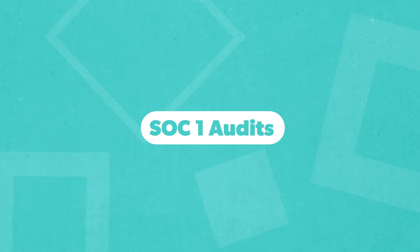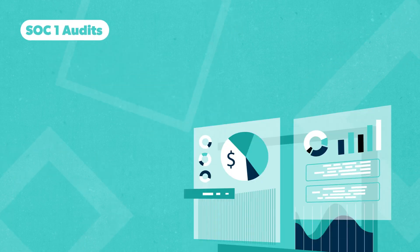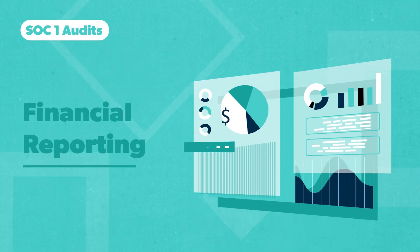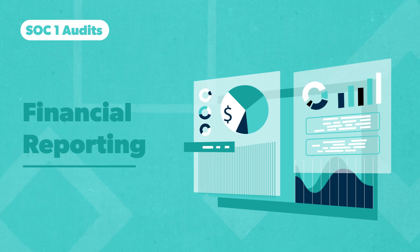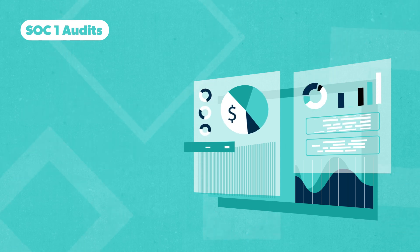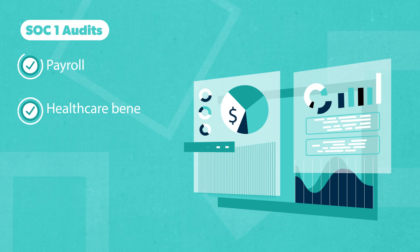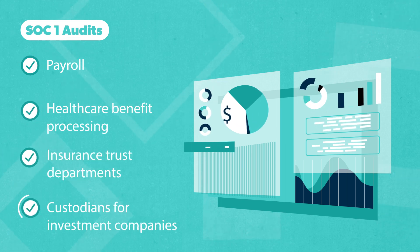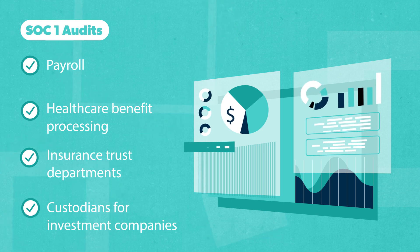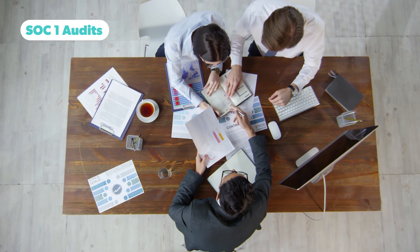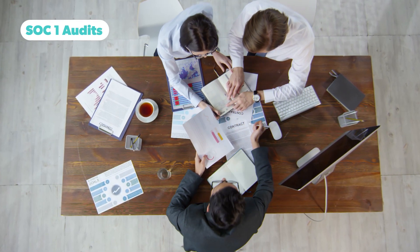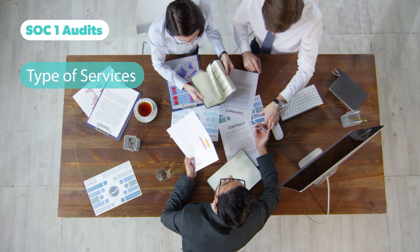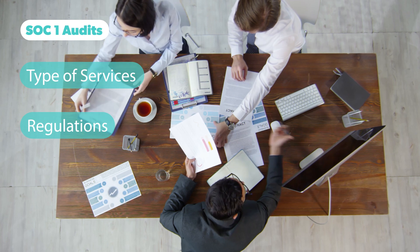Now let's talk about SOC 1 audits. SOC 1 audits are conducted when a service organization needs to demonstrate its command over financial reporting. Examples of service organizations are companies that manage payroll or healthcare benefit processing, insurance trust departments, or custodians for investment companies. During a SOC 1 audit, CPAs will review a company's entire set of internal financial controls in relation to the type of services they provide and the regulations in that industry.